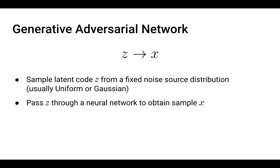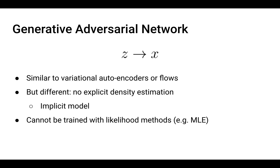The original generative adversarial network formulation from 2015: the idea of an implicit model is to start with a sampled latent code Z, typically from a Gaussian distribution, which is then passed through a neural network to obtain a sample X, usually an image. This formulation is similar to variational autoencoders and flows, but also very different because it does not do any explicit density estimation. That's why it's called an implicit model — the generator induces a density, but it's not explicitly expressed, and thus cannot be trained with likelihood methods.